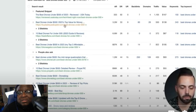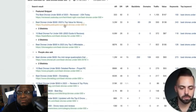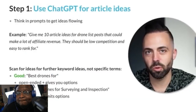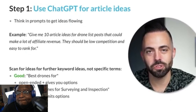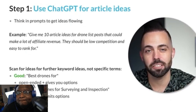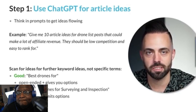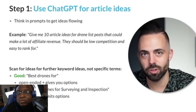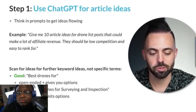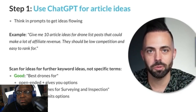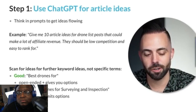This is important: when making affiliate revenue, you want to use the word 'best' because 'best' signifies buying intent. You can use ChatGPT to find the best product categories in your niche to make affiliate revenue — like 'best drones for...' — and you'll have tons of different long-tail keywords that you can rank for.